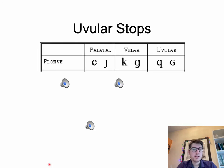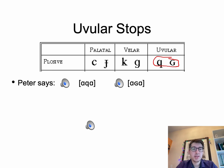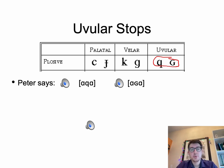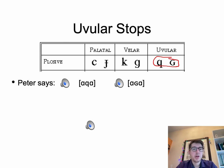Here are the uvular stops, written as 'q' for voiceless and uppercase 'G' but as a smaller letter for the voiced version. Try to make 'k' and 'g' but go further back with your tongue to produce uvulars. Peter Ladefoged demonstrates them — try something like 'k, k, k' and 'g, g, g' but further back.